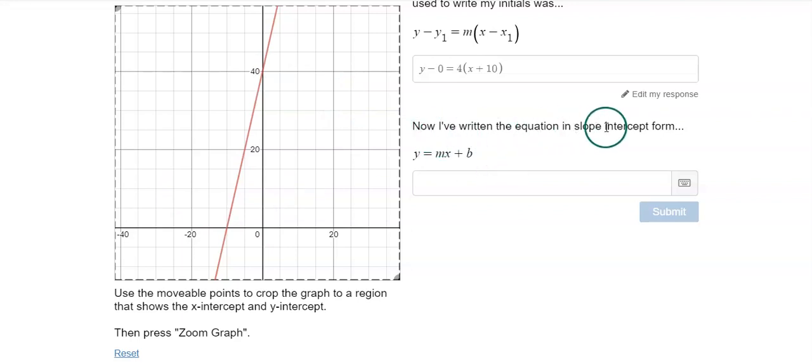It says now I've written the equation in slope intercept form. So you will probably need a scratch piece of paper to do distribution and move that term over. But once you do that, you'll have an equation written in slope intercept form. My equation would be Y equals 4X plus 40. When I press submit, nothing happens on my graph.